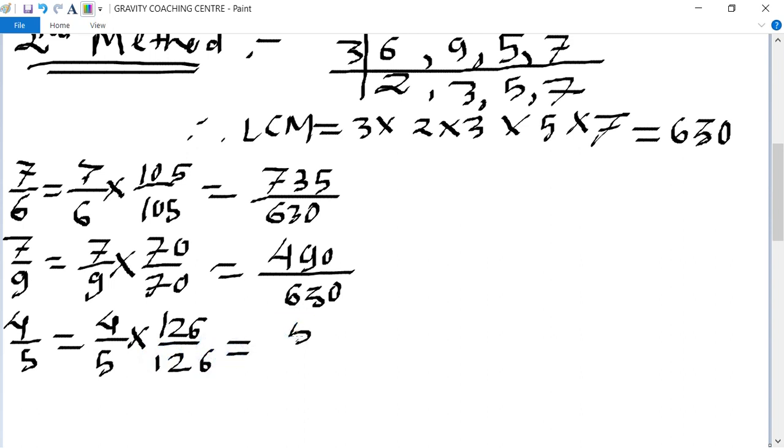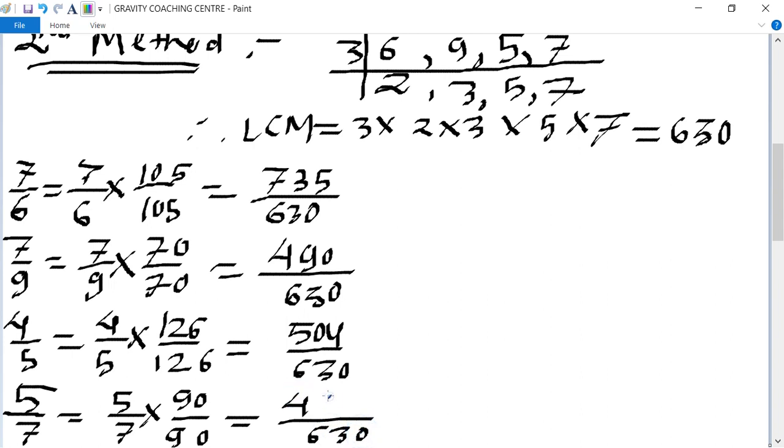And last one is 5 upon 7 equal to 5 upon 7, and 630 divided by 7 is 90, equal to 450 upon 630. Now we check which one is the smaller: 735, 490, 504, and 450. So 450 is the smallest, so 5 by 7 is the smallest fraction.